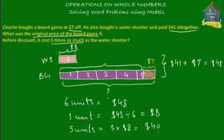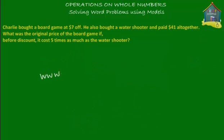If you were asked to find the price that Charlie actually paid for the board game, that would be $40 minus the $7 discount, so Charlie paid $33. But the original price of the board game was $40, excluding the discount. For more word problems and practice exercises, visit www.homecampus.com.sg. Don't forget to practice — practice makes perfect.